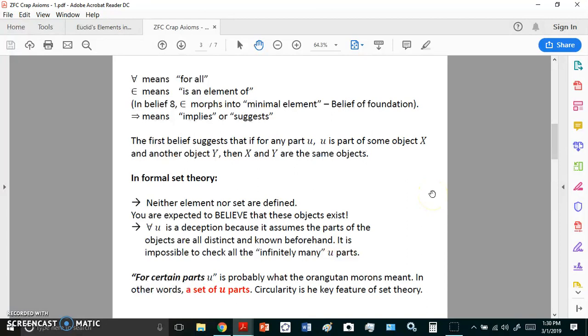The first belief suggests that if for any part u, u is part of some object x and another object y, then x and y are the same objects. In formal set theory, neither element nor set are defined. You are expected to believe that these objects exist.